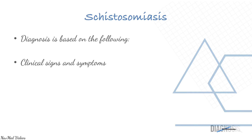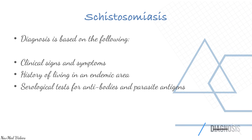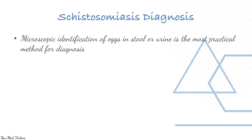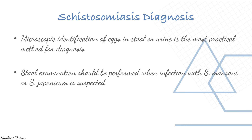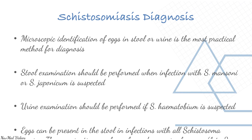Diagnosis is based on clinical signs and symptoms, history of living in an endemic area, serological tests for antibodies and parasite antigens, and finding characteristic eggs. Microscopic identification of eggs in stool or urine is the most practical diagnostic method. Stool examination is used when S. mansoni or S. japonicum is suspected, while urine examination is used if S. haematobium is suspected. Eggs can be present in stool in infections with all schistosoma species.